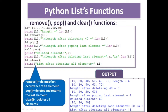Now, the pop function. L1.pop() with empty brackets — what does it do? It removes and returns the last element of the list. That means you can store it in some variable as well — it is a returning method. So after calling l1.pop(), the last element 70 will be deleted and the length after popping is checked.